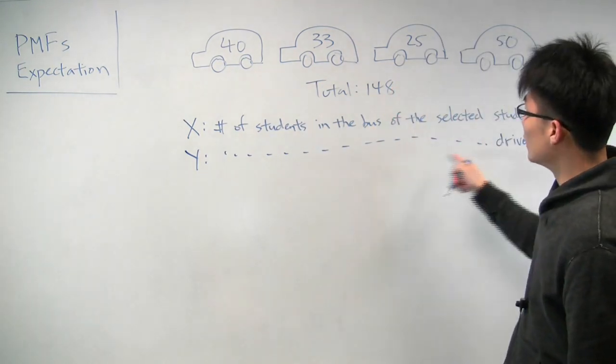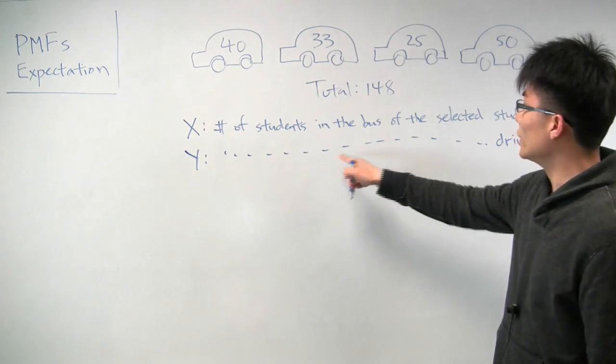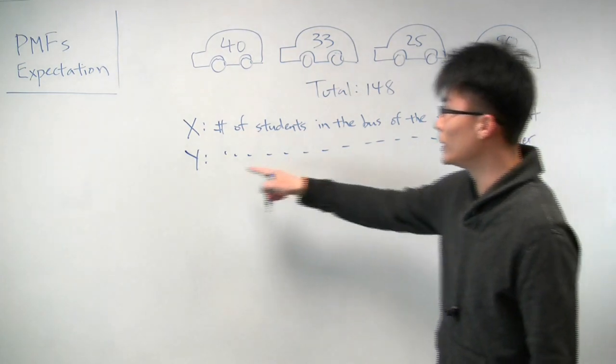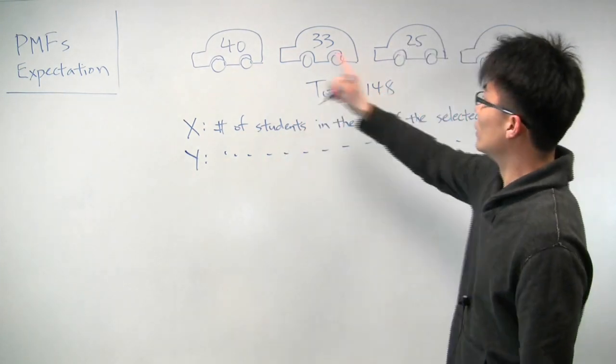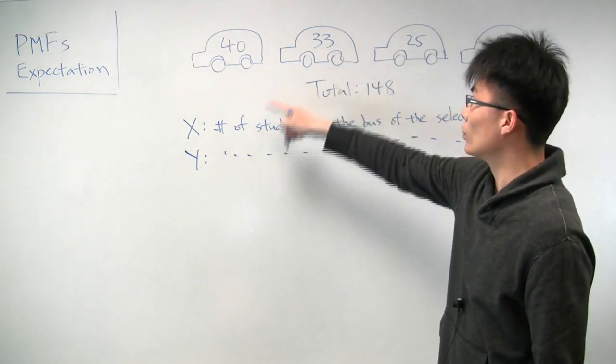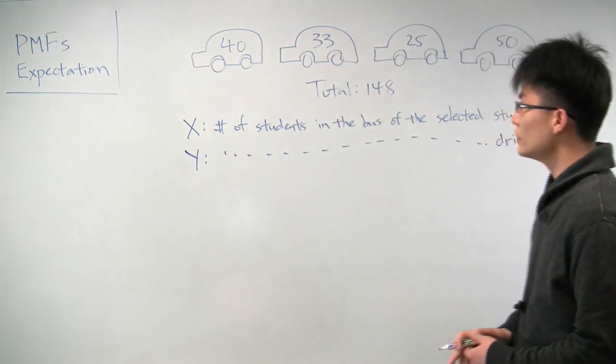And we'll say the number of students in that driver's bus will be y. So for example, if this bus driver was selected, then y would be 33.